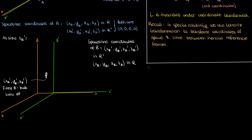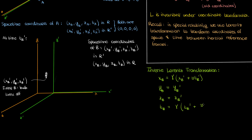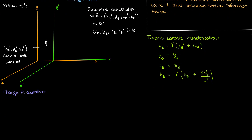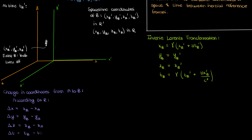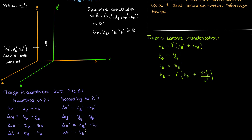Now how do I convert from the primed coordinates of event B to the unprimed coordinates? I use the Lorentz transformation — specifically the inverse transformation equations. My y and z coordinates don't change because the reference frames are only moving relative to each other in the x direction; there's no motion in the y or z directions. I'll then define the change in coordinates from event A to event B: the change in x coordinate in frame R is delta x, and in R' it is delta x'. The same logic applies for the y, z, and t coordinates.